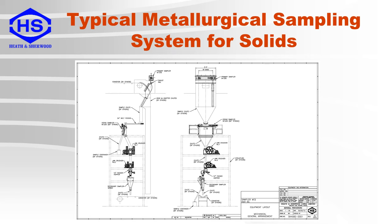Here we have an example of a metallurgical sampling station for solids. At one end of the conveyor belt is a cutter, which moves back and forth on a timed interval. The sample then drops down to a belt feeder, which directs the sample to a sizing sampler for size analysis by the lab. The reject from this sampler then goes through two stages of crushing to a secondary sampler, which produces the sample for the analytical lab.